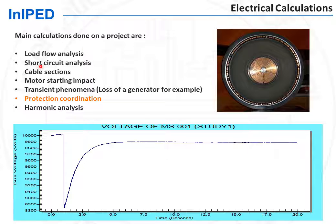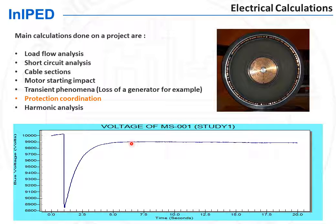Besides the calculations already mentioned for the electrical system, the electrical engineer performs cable cross-section calculations as well as transient analysis — for instance, the loss of one of the main power generators. The purpose is to check that the voltage dip is not deep and long enough to affect the process, for instance to cause the large process pumps to stop.